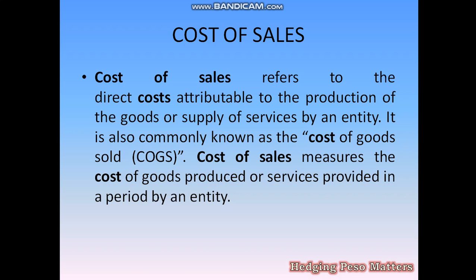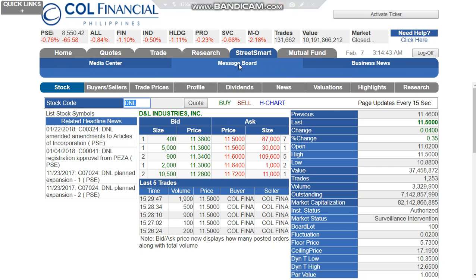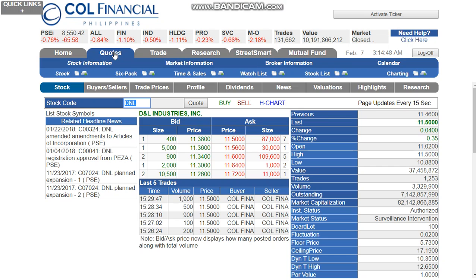So here in cost of sales, it's about how much our allotment is to produce one stuffed toy, and how much we can sell it for. Now for our recap, we go to the quotes section in our COL Financial platform, where we can see our data.